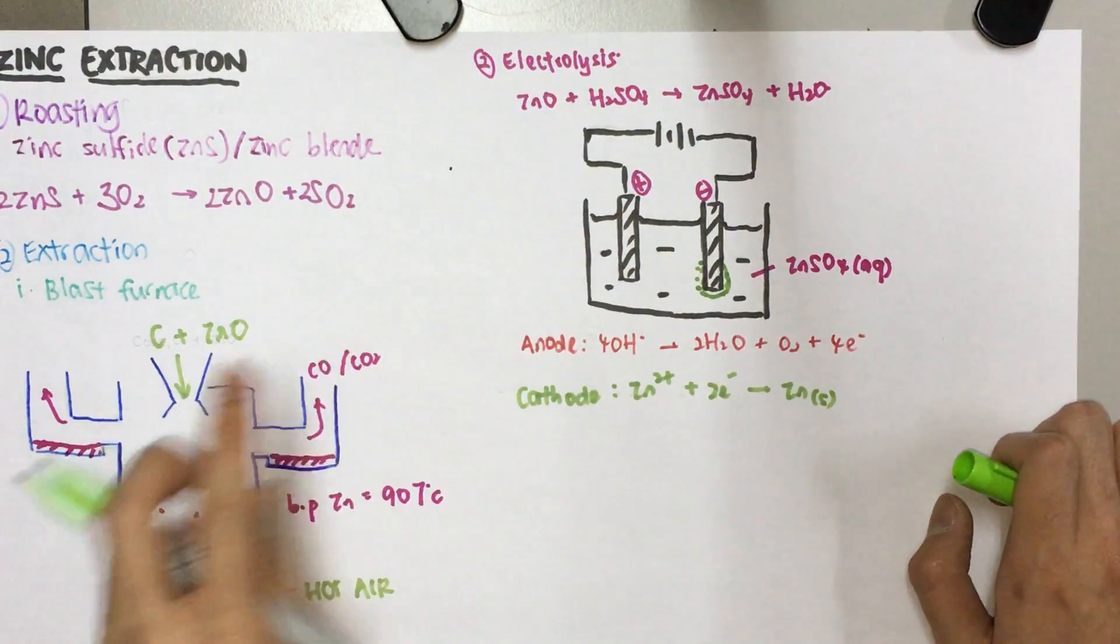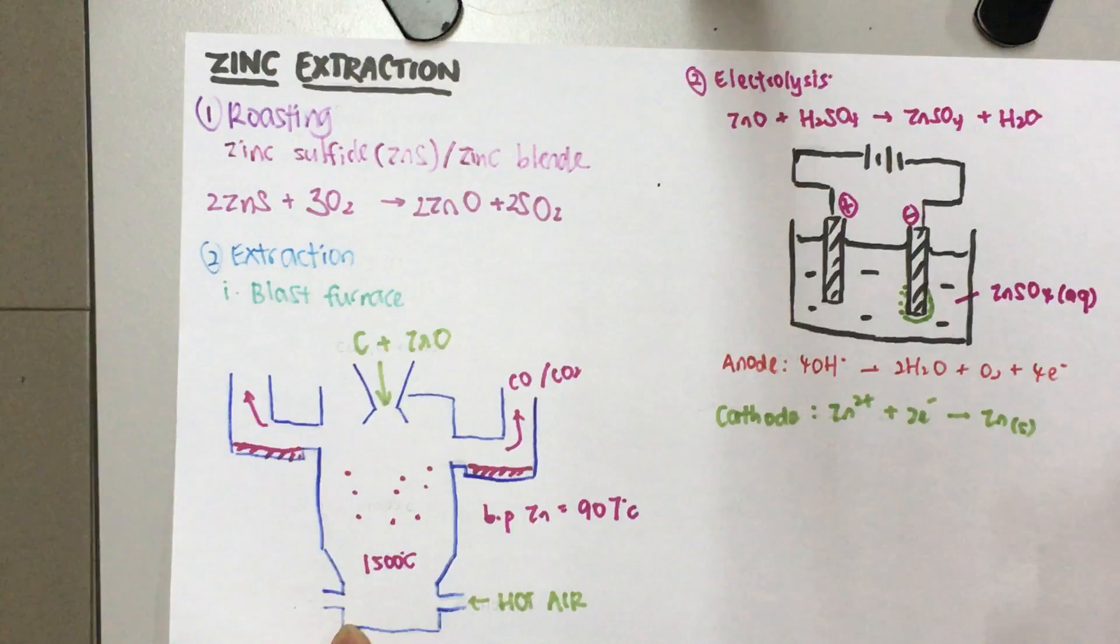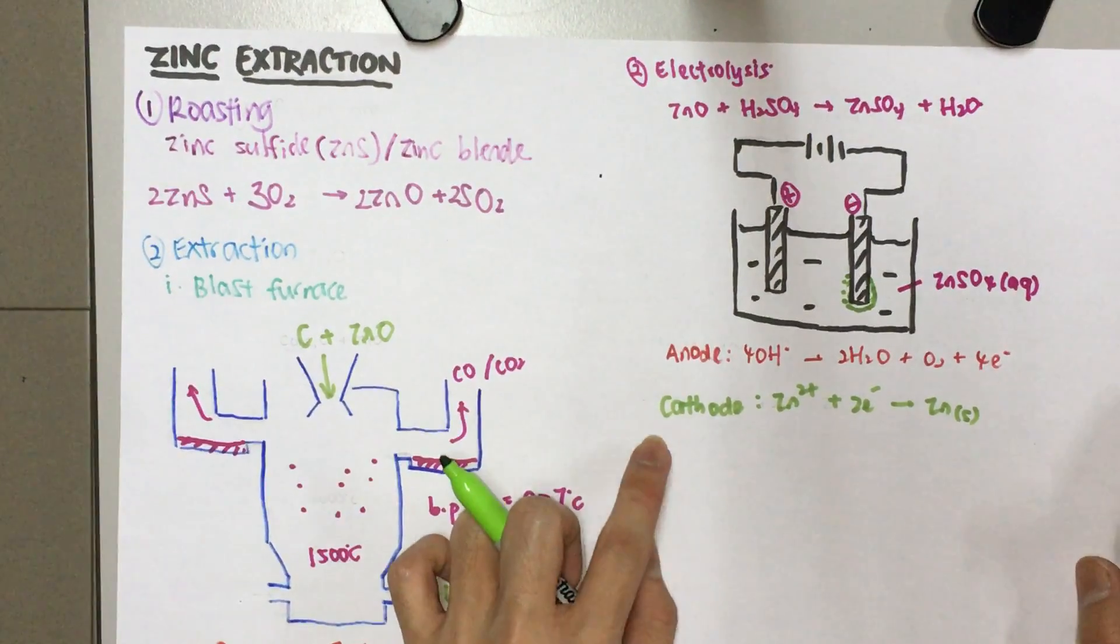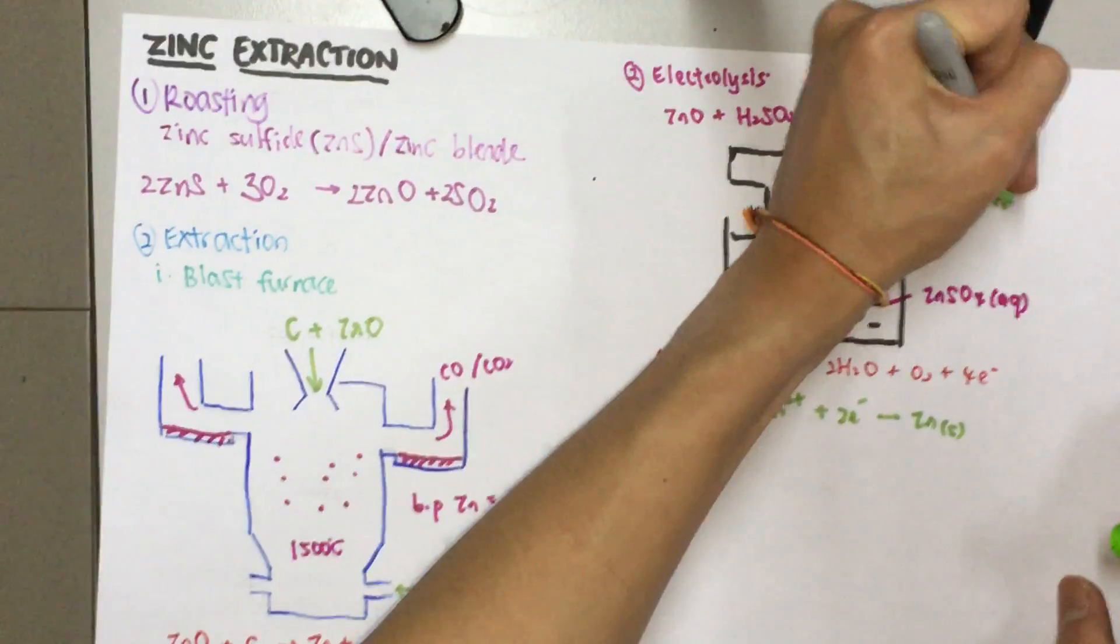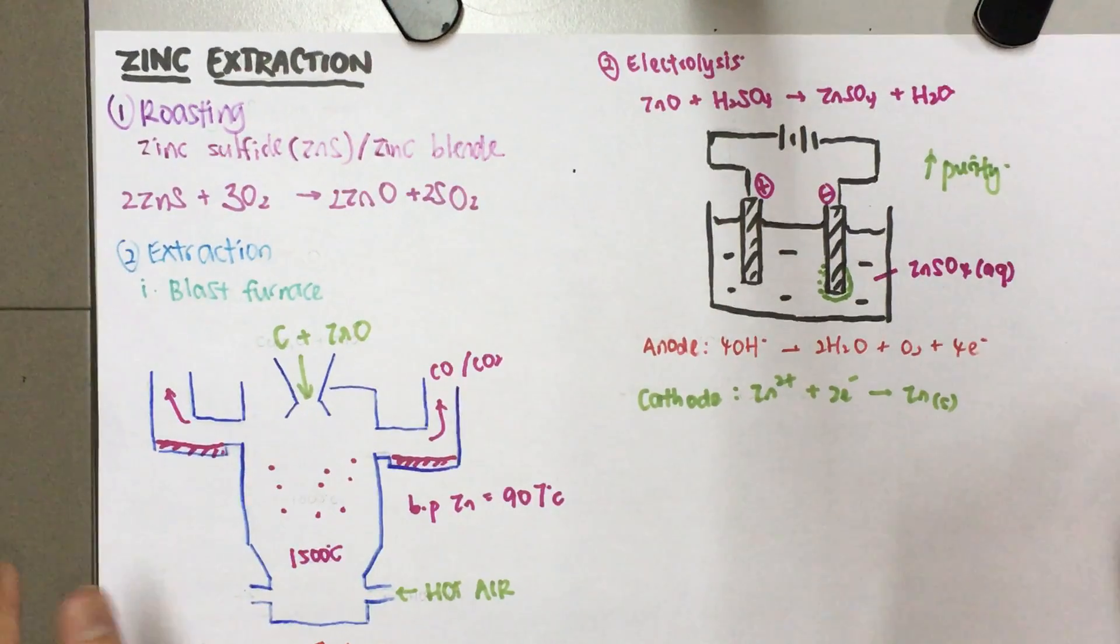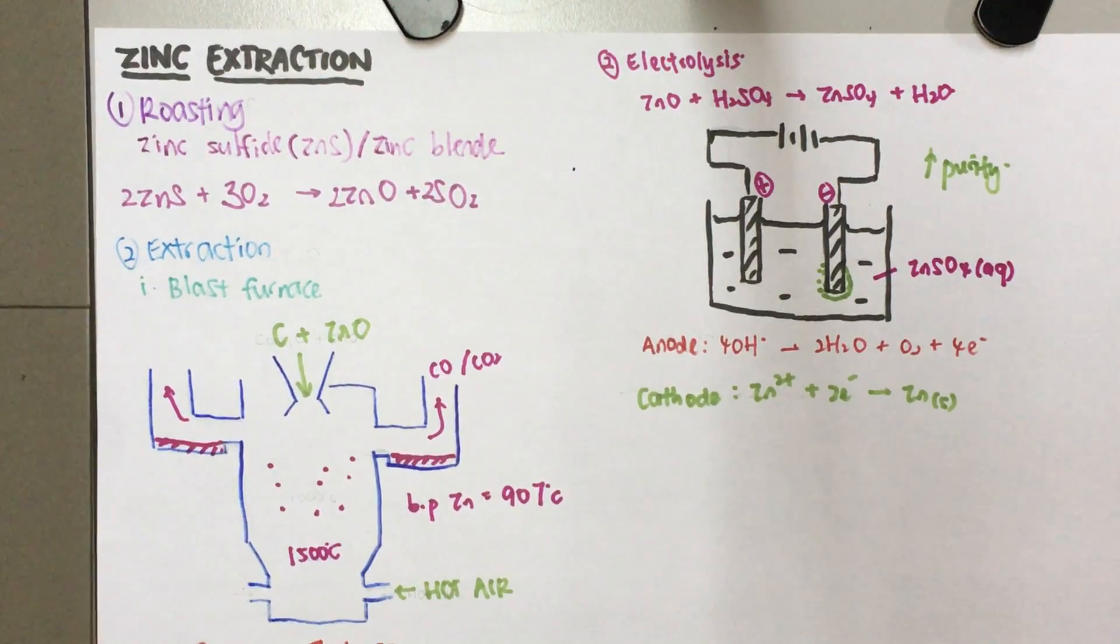They used to prefer the blast furnace method, but right now they are moving on to electrolysis method, because it yields a very high purity of zinc. That's it for today. Hope you enjoyed the video.